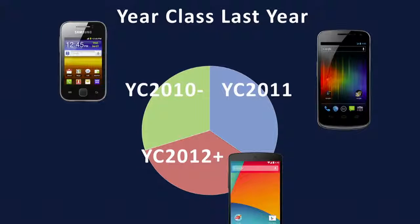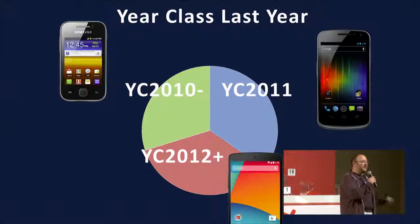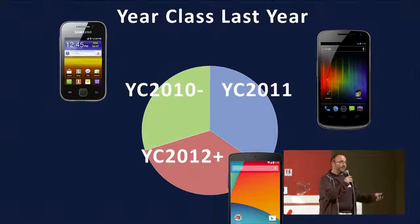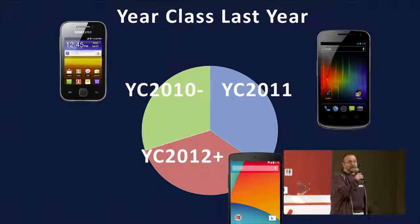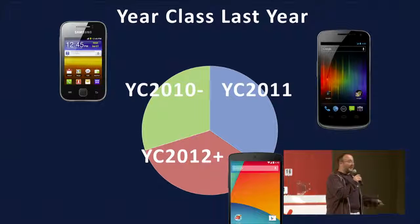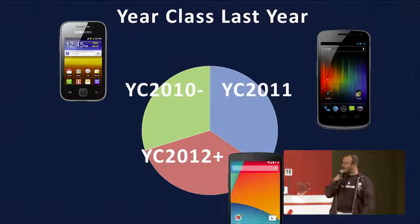This has been useful because all of a sudden we can classify the whole world of 10,000 devices into smaller groups, and we can reason about them more easily. Once we actually got this data, we started seeing some interesting trends.